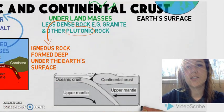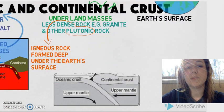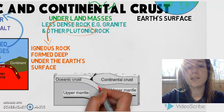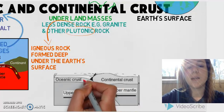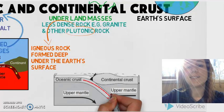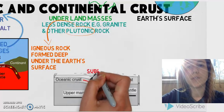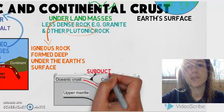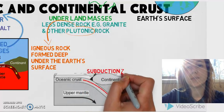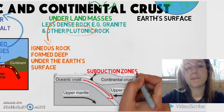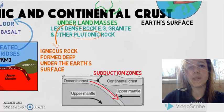Because the oceanic crust is so much more dense than the continental crust, sometimes it can slip underneath the continental crust at what we call subduction zones. And that's all you need to know for our introduction to the topic.